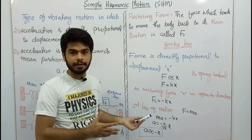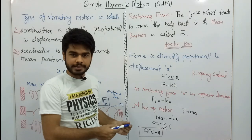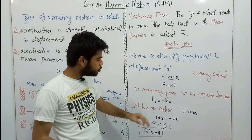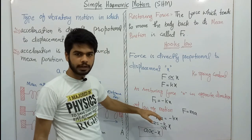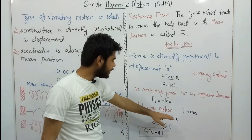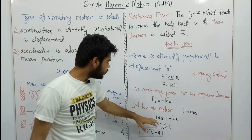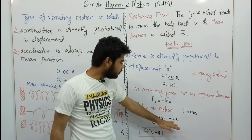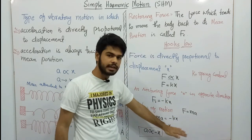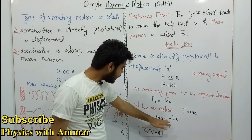Now restoring force equals minus kx. According to Newton's second law of motion, F equals ma — mass into acceleration. So we put it here: F equals ma equals minus kx. This shows that acceleration is directly proportional to minus x, confirming the definition of simple harmonic motion.